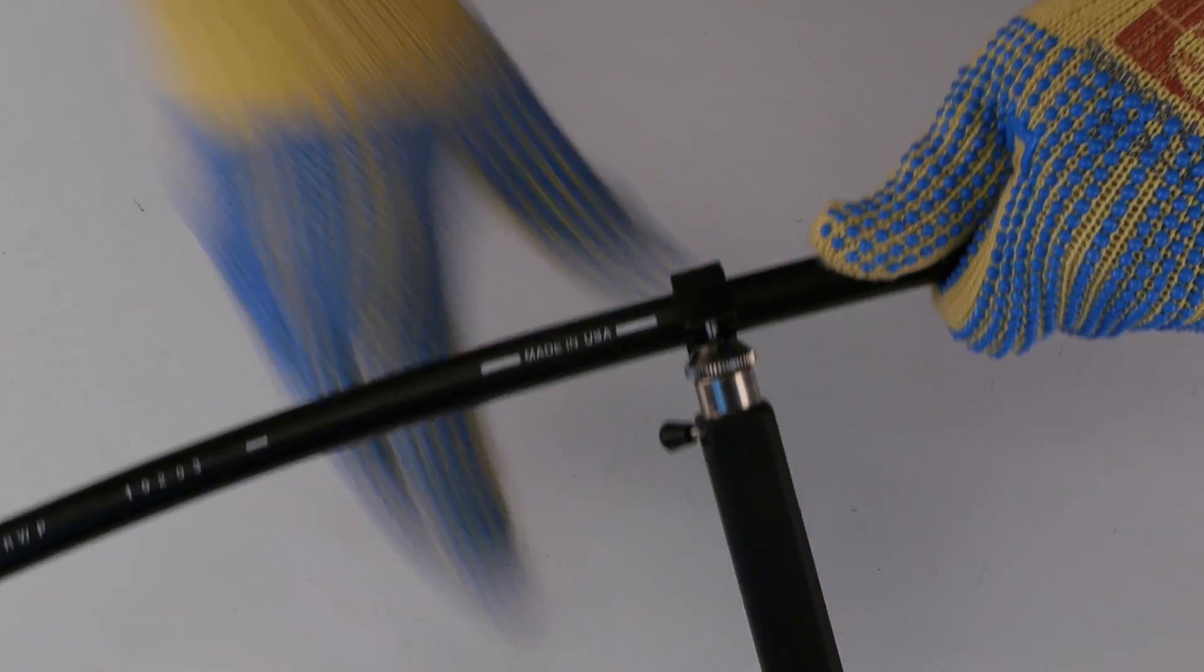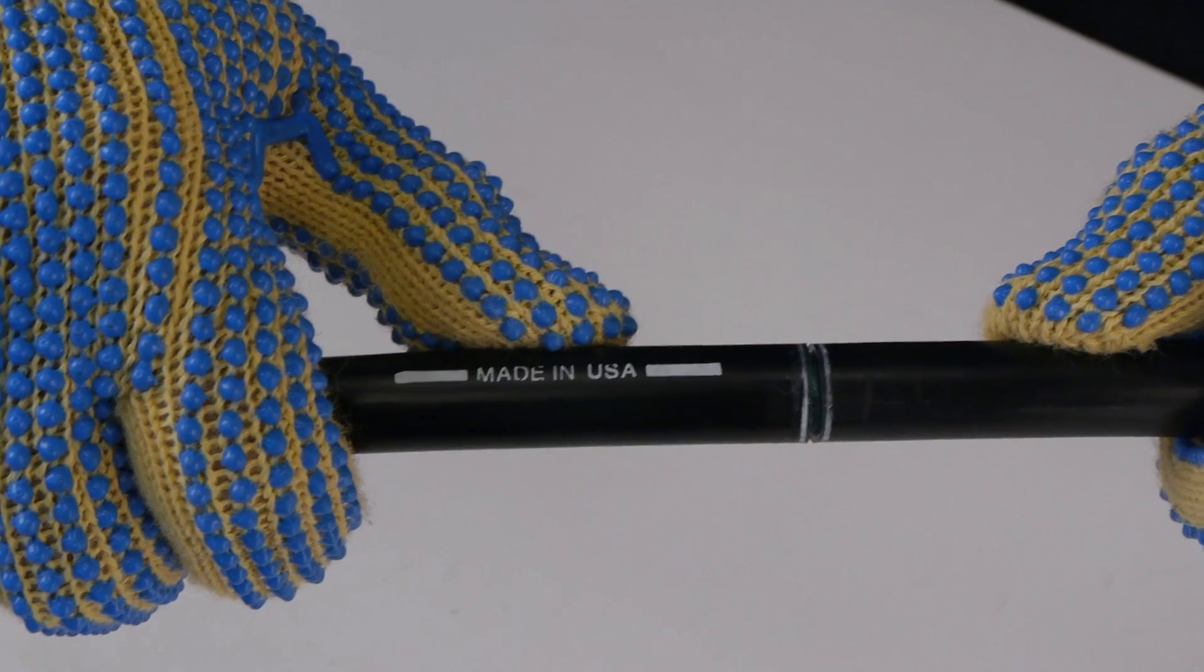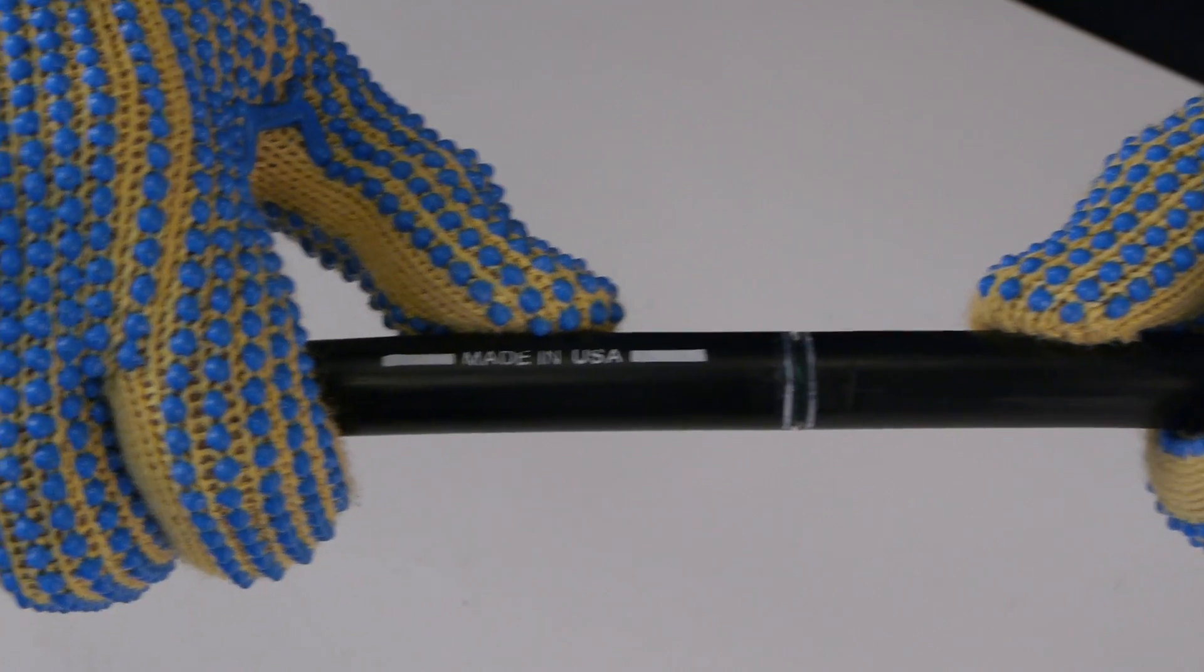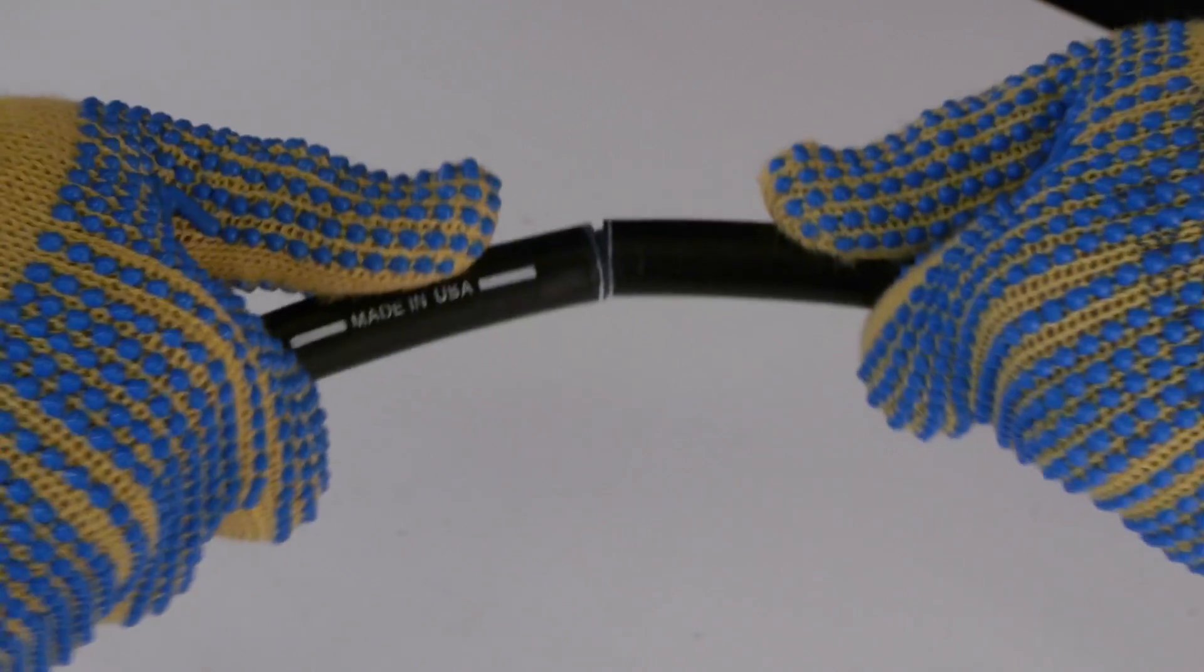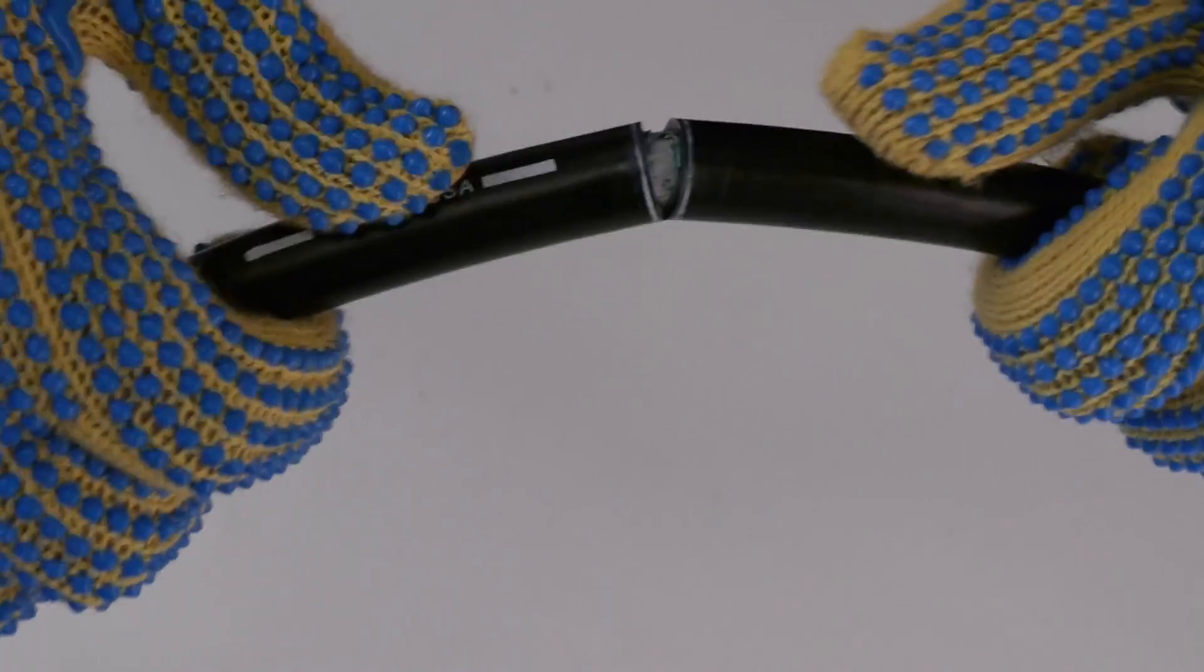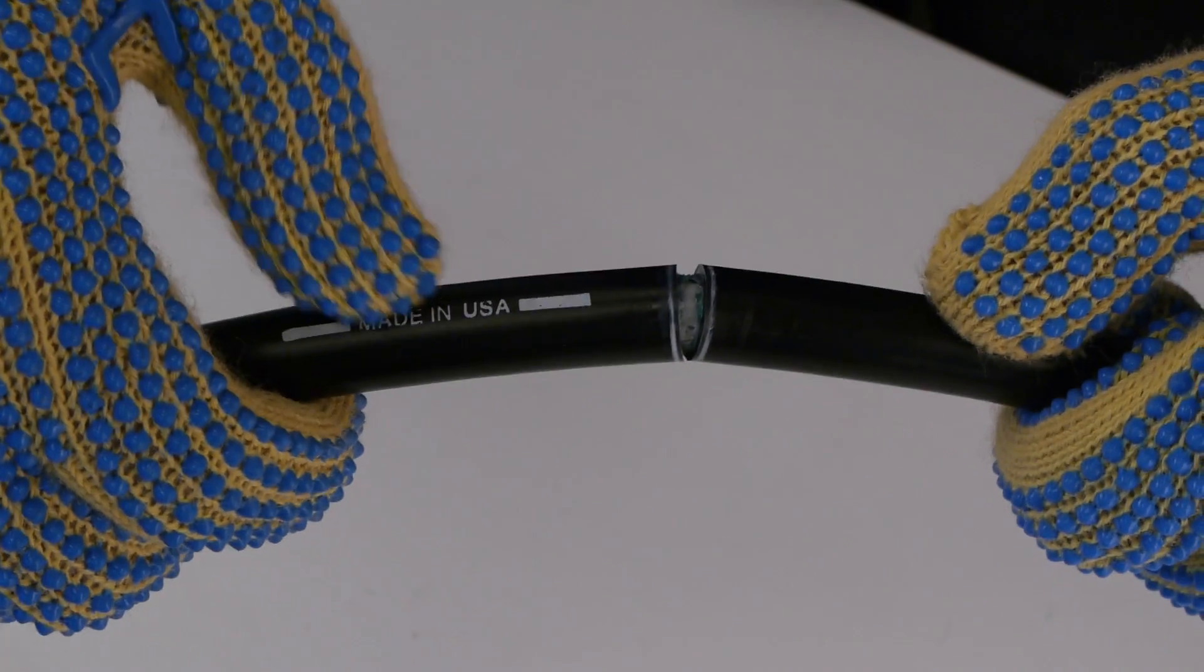Ring cut jacket with rotary cutting tool. Flex the cable slightly at the cut to complete the opening of the jacket. If necessary, adjust the cutting depth and repeat the process until the jacket or armor is completely cut through.